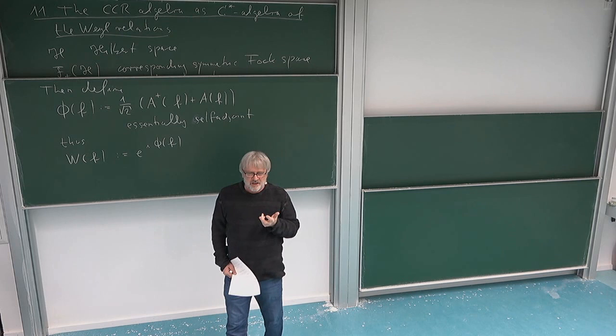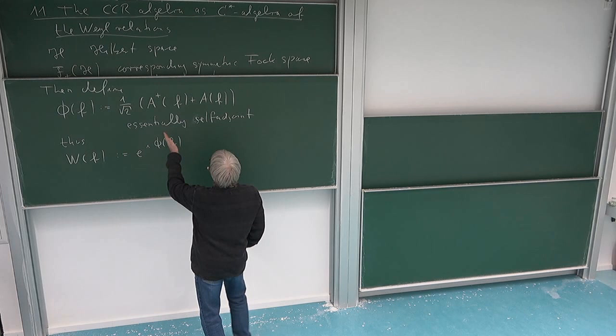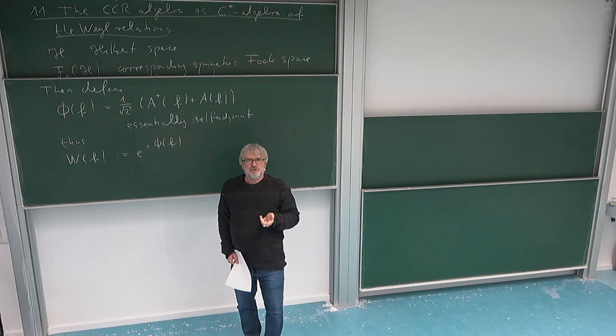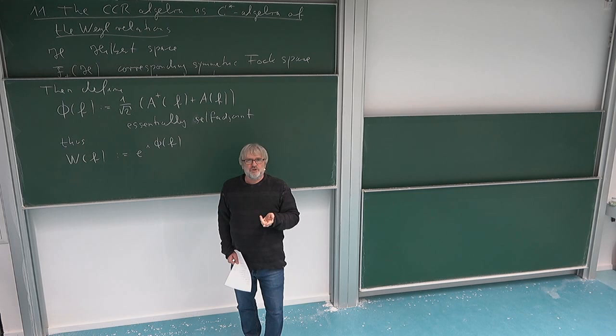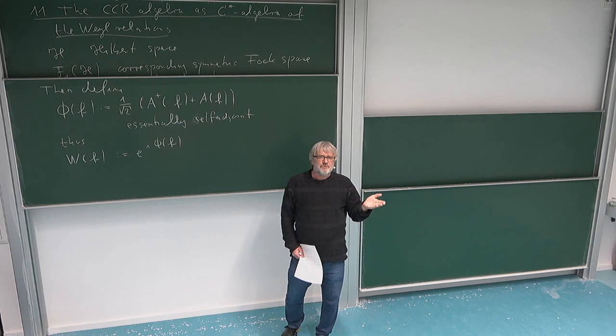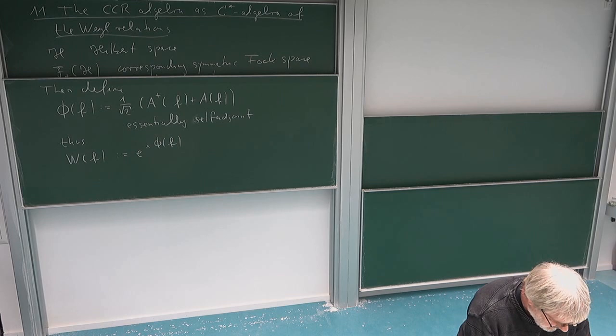You might wonder about the reformulation in terms of P and Q. Recall that one was the sum and one was the difference of creation and annihilation operators. But notice that if we define φ(f) for all f, this is already included. Because the annihilation operator is anti-linear in its argument, by choosing multiples with i of f, we also get the corresponding minus — so we do not need to separately take the sum and the difference.